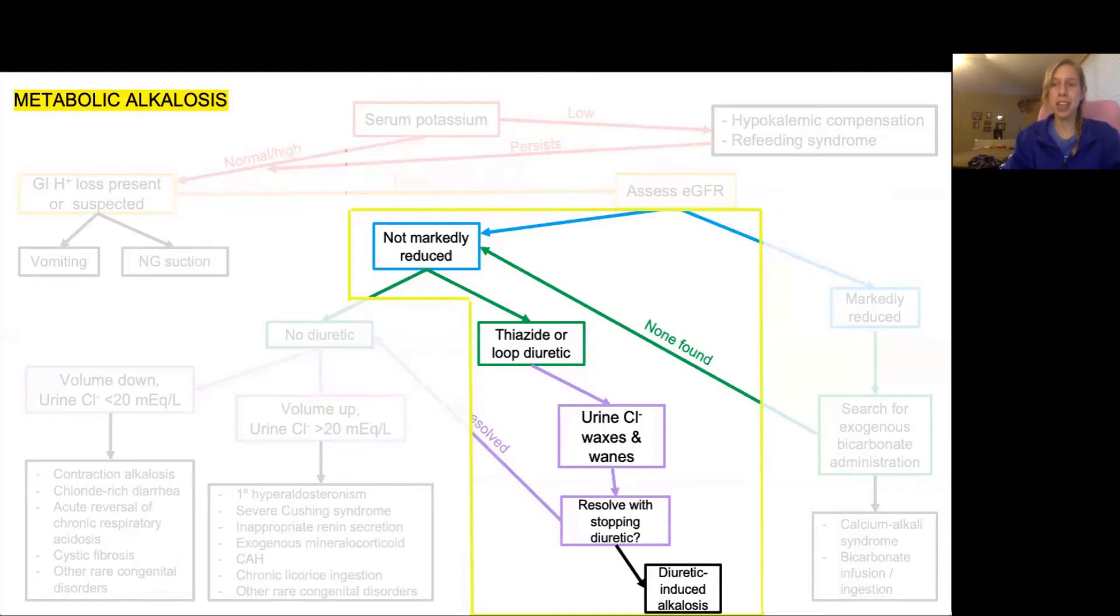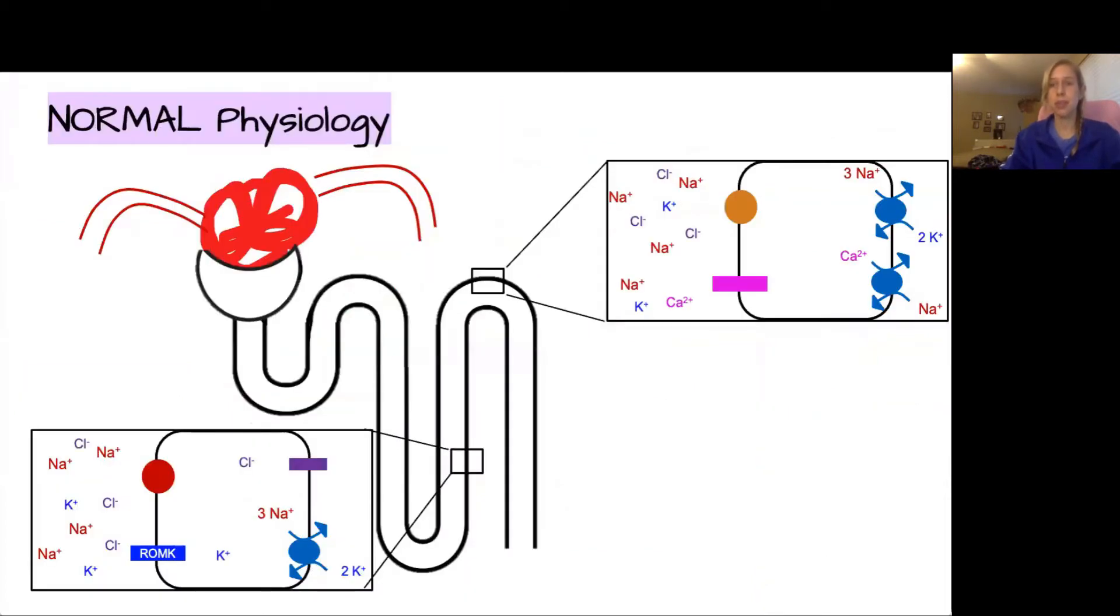Today we're going to be talking about the last branch of our giant metabolic alkalosis map. This video is going to be on diuretic-induced alkalosis with specific focus on thiazide and loop diuretics. First, we're going to go through some normal physiology.